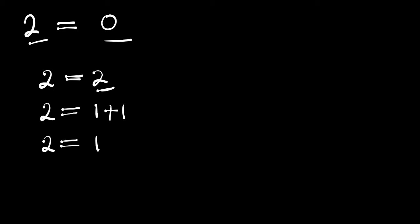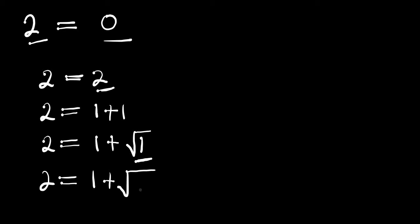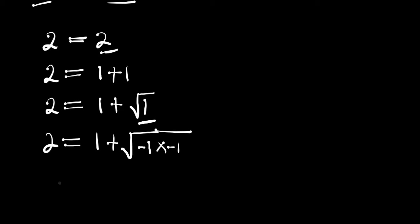From here we can have 2 equals 1 plus the root of 1. The root of 1 is 1, so we haven't changed anything. We have 2 equals 1 plus — and we can rewrite this as the square root of negative 1 times negative 1, since negative 1 times negative 1 is positive 1. From here we can have 2 equals 1 plus the square root of negative 1 times the square root of negative 1.